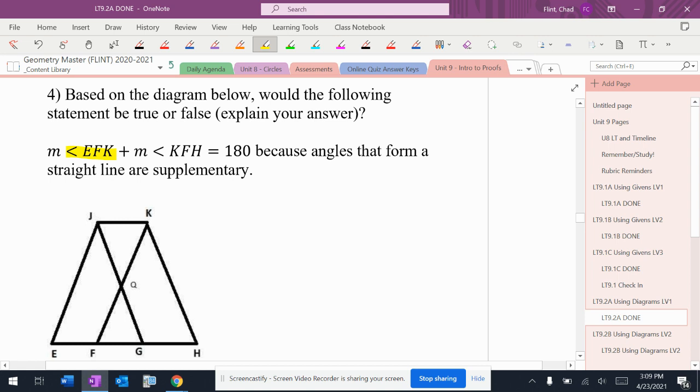So EFK, EFK is that angle right there. KFH is that angle right there. They do form a straight line right there. Okay, so it is true. The reason fits, it's something I know without being told.